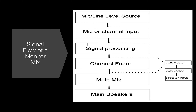Here's the signal flow of a monitor mix. Signal flow is important because you have to understand where the signal starts and where it goes. We have our mic or line level source — our singer singing into a mic — plugged into mic input one. Then we do our signal processing: EQ, maybe some compression, and then we use the channel fader to raise it up in the mix. Here's where aux sends come into play — a pre-fade aux send happens before the channel fader, and a post-fade aux send happens after the channel fader. They both feed an aux master, which controls the overall balance of the mix, and then that goes out the aux output and into the speaker exactly as the performer wants it.